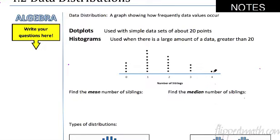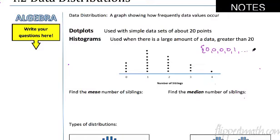All the way down, one person has four siblings. If I wanted to, I could write all these numbers out. First I'd start with zero, zero, zero, zero, then a one, and keep going. In math, sometimes we use the ellipsis — dot, dot, dot — meaning we keep going until we get three, three, three, and then a four as the very last one.